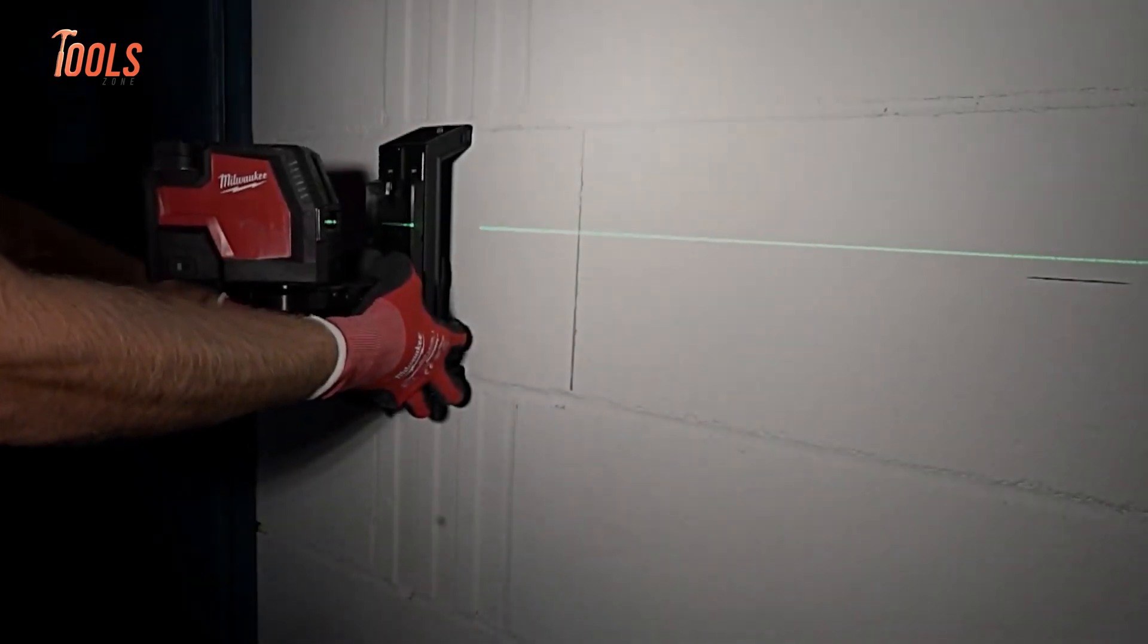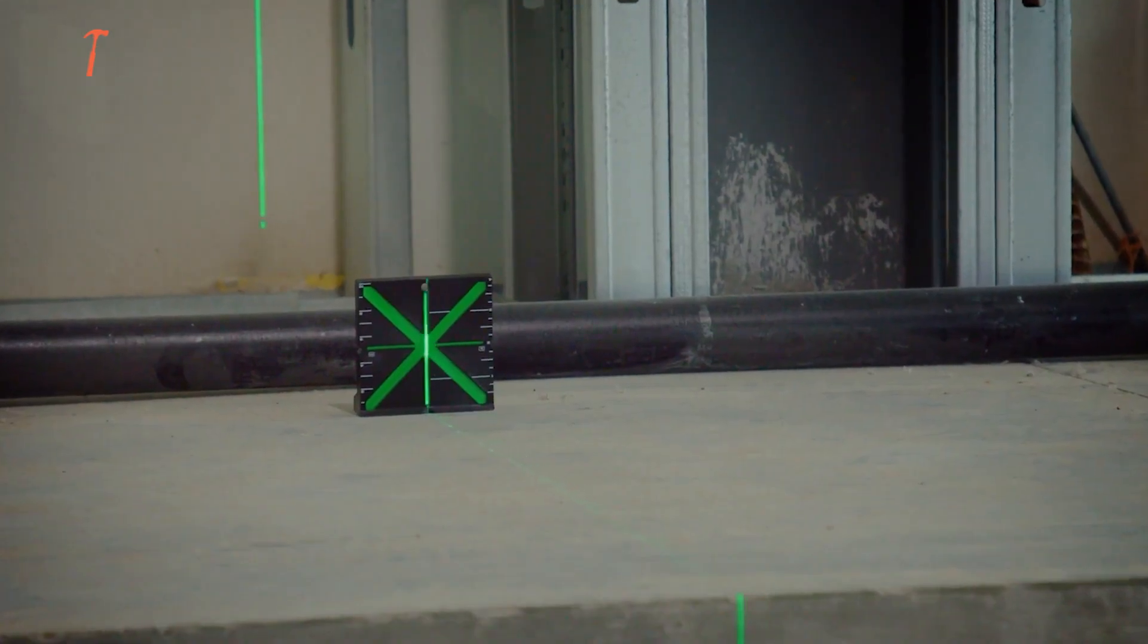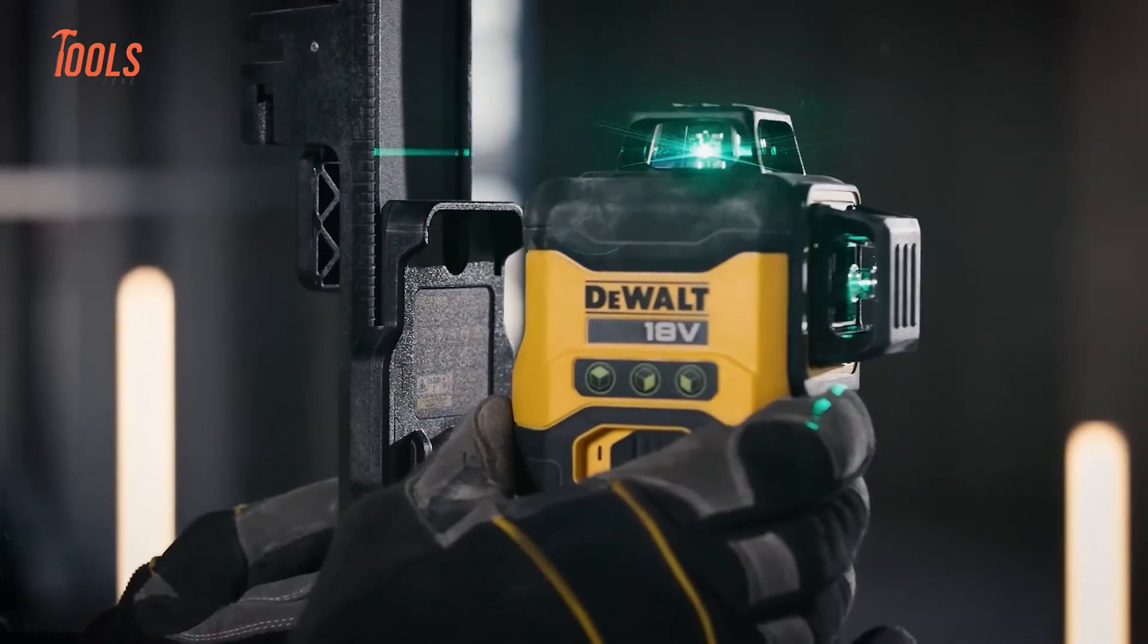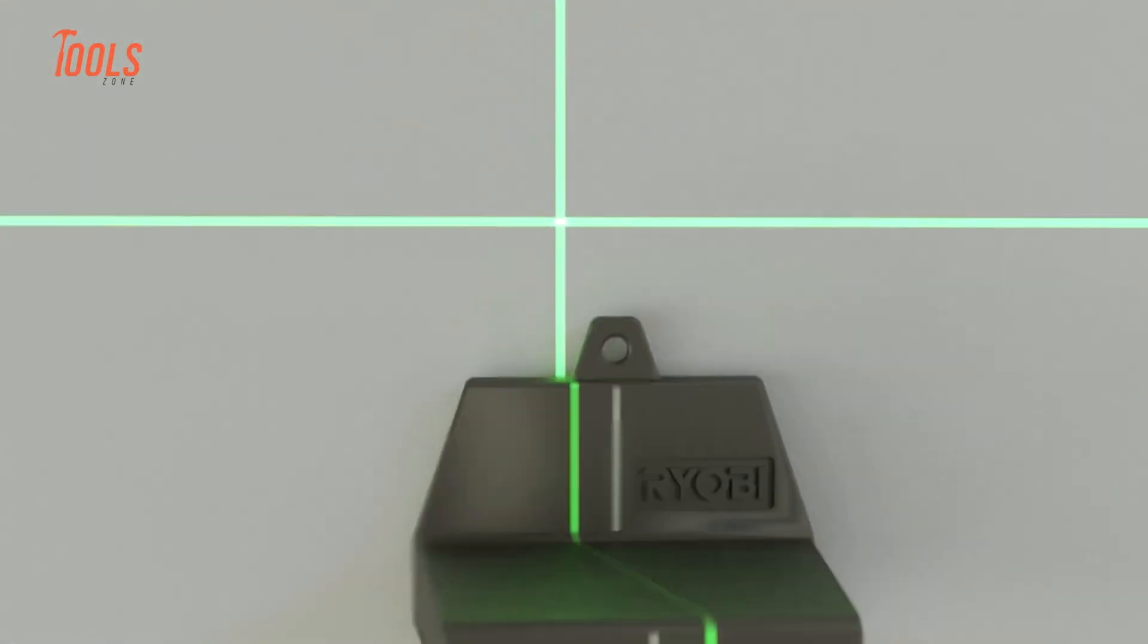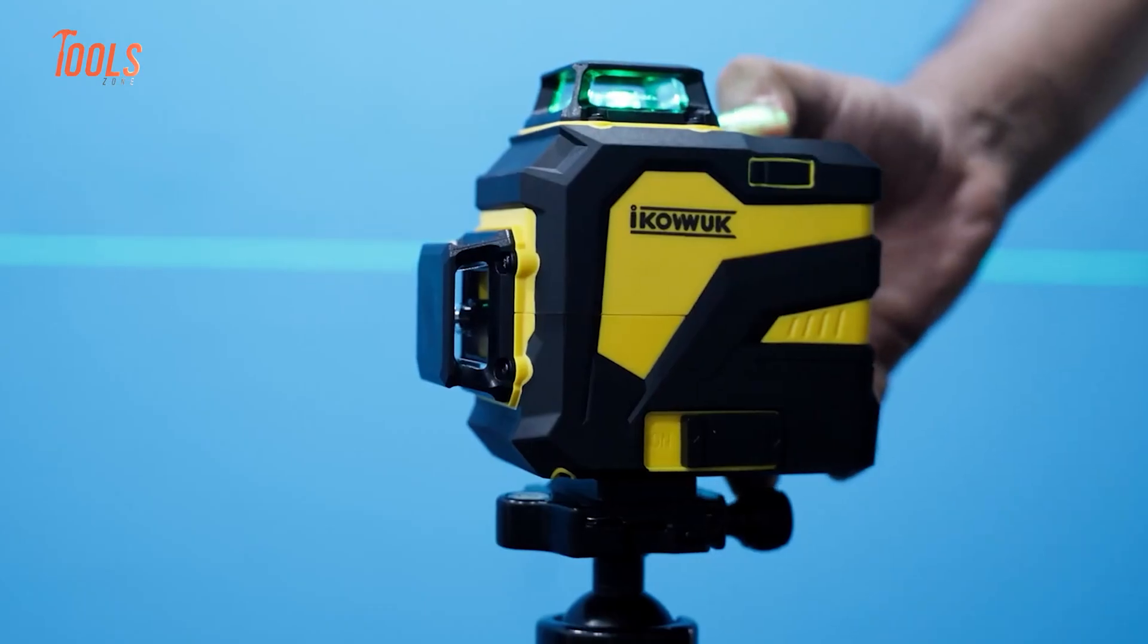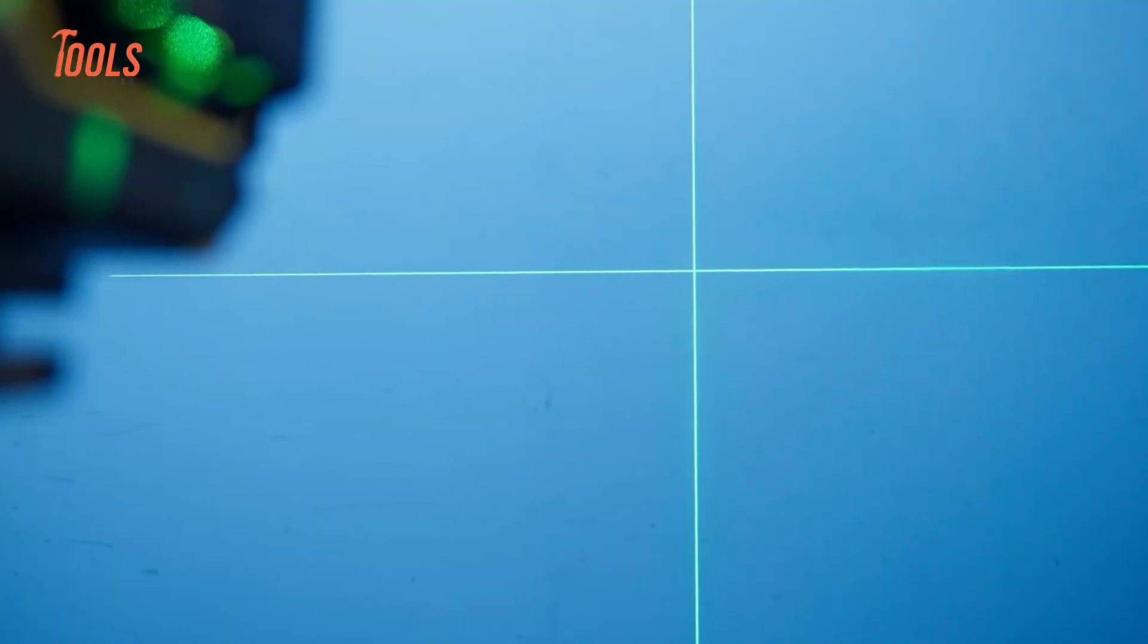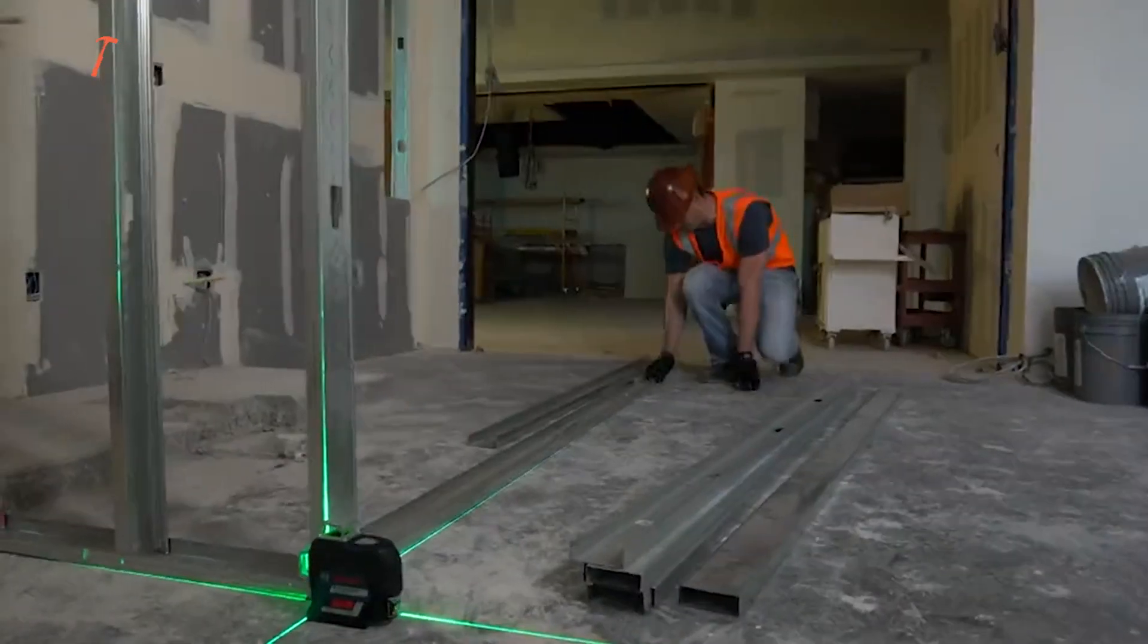Next comes the laser beam itself, and this is where color makes a big difference. Most budget-friendly models use red lasers, while more expensive ones often use red lasers. Now, the main reason behind this is visibility. Green lasers are about 4 times brighter than red ones, which means they are easier to see, especially in bright indoor environments or even outdoors during the day.